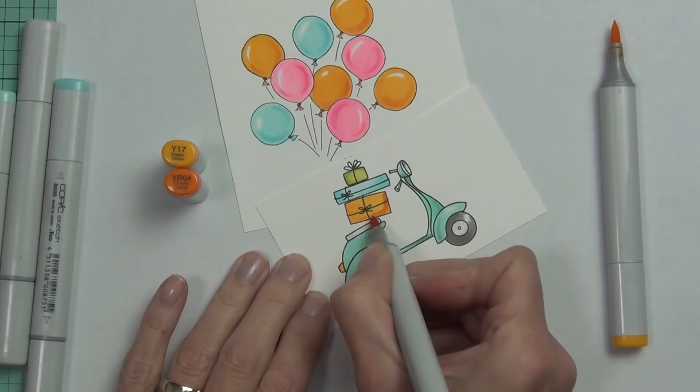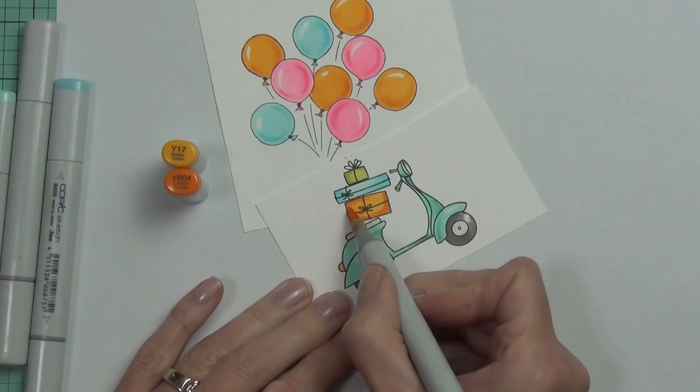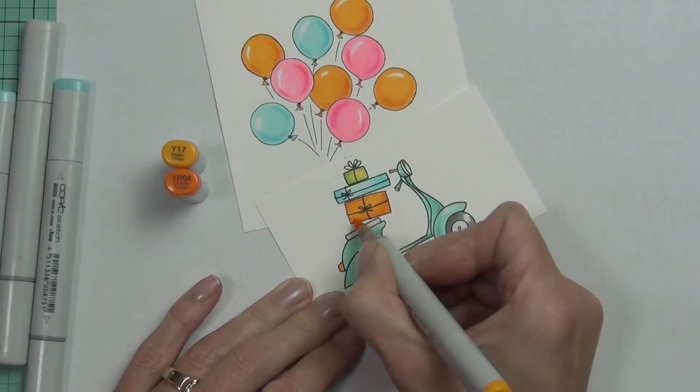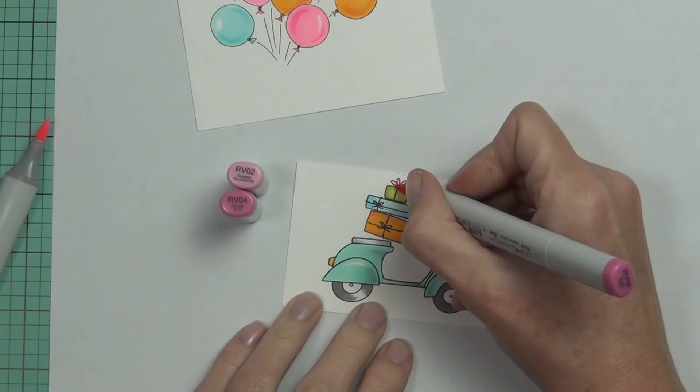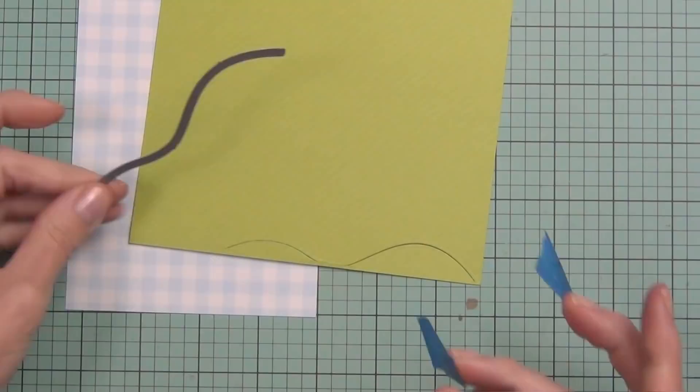So I stamped out my scooter again, and this time I stamped the parcels that are in the Good Times stamp set on top of the seat. I'm going to be joining these two together with some matte medium after I've cut them out. But I will have to cut both of these images out by hand because I can't use my coordinating die cuts. I won't show you that today because it does take a bit of time.